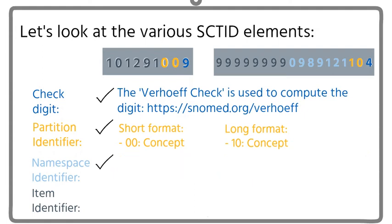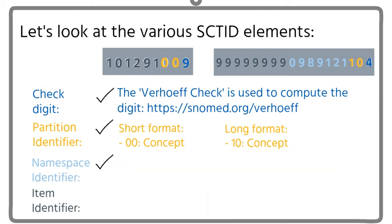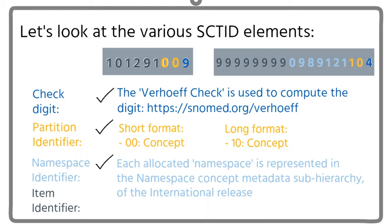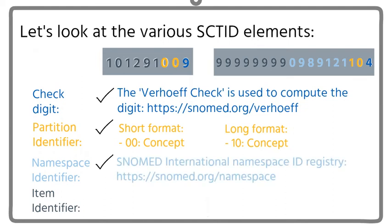The namespace identifier is allocated by SNOMED International to each organisation that is authorised to generate SNOMED IDs. Each allocated namespace is represented in the namespace concept metadata sub-hierarchy of the international release. The international namespace ID registry is located at snomed.org/namespace.